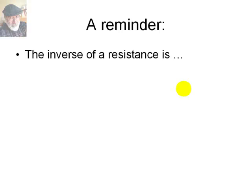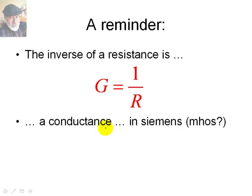A reminder from our previous course EEC 251. Do you remember what is the inverse of a resistance? It was represented with the letter G. That's right. It was the conductance, measured in Siemens, formerly in Mhos, an upside-down Ohm.